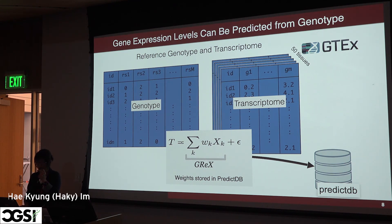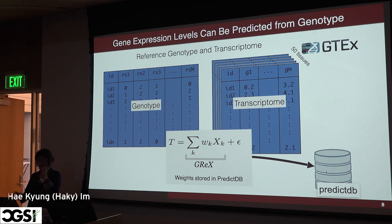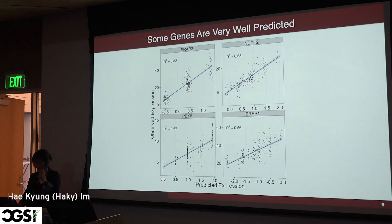We fit a linear model where T is the expression level, one gene at a time. You take one column and fit it against the genotype matrix to estimate what we call genetically regulated expression levels. Once you have these weights, you save them in a database called PredictDB, and then you can go to your GWAS and predict expression levels.